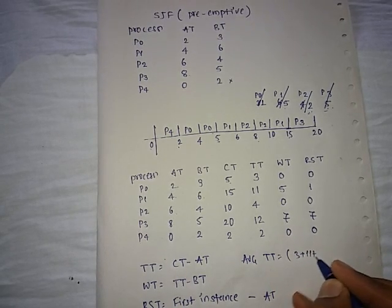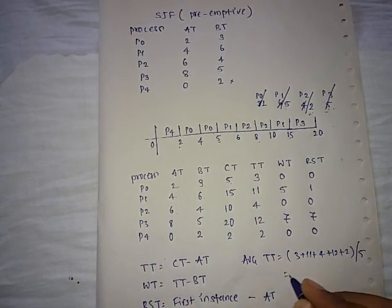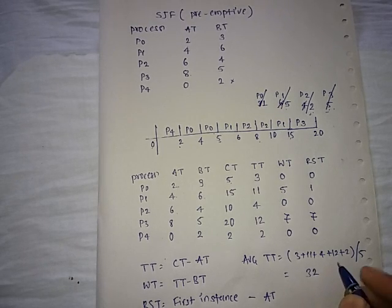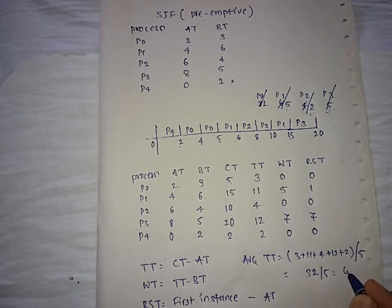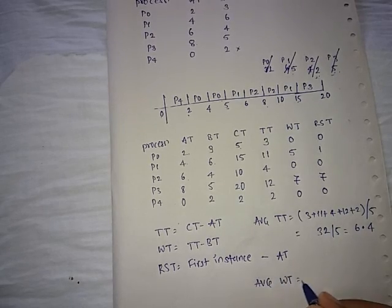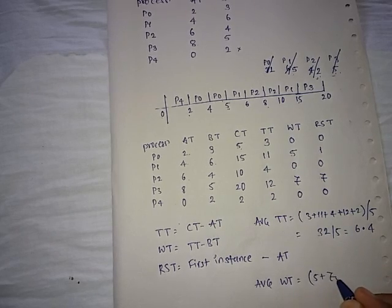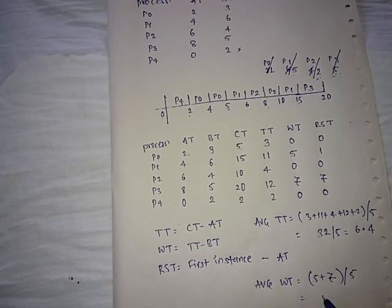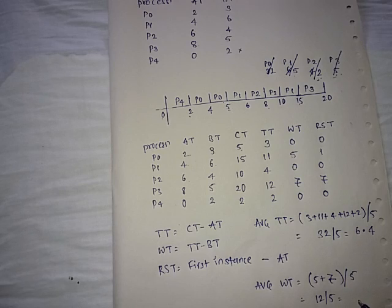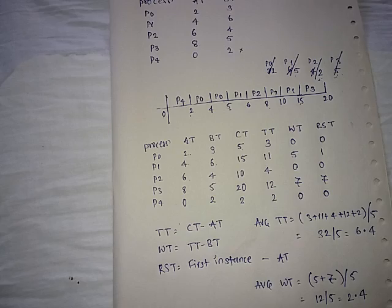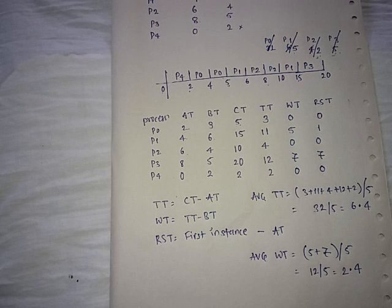Average turnaround time is the sum of all turnaround times divided by the total number of processes: 3 plus 11 plus 4 plus 12 plus 2 equals 32, divided by 5 equals approximately 6.4. Average waiting time: 0 plus 5 plus 0 plus 7 plus 0 equals 12, divided by 5 equals approximately 2.4.